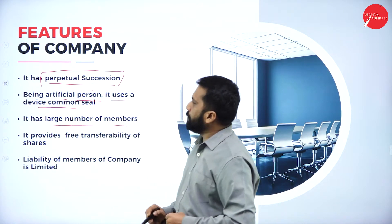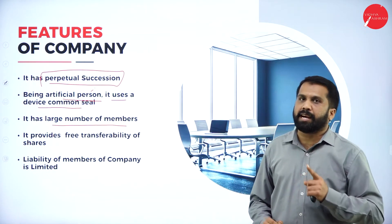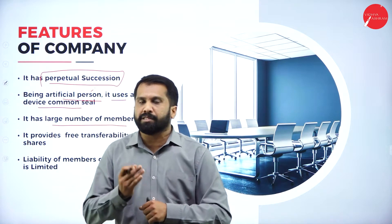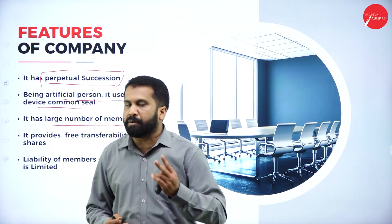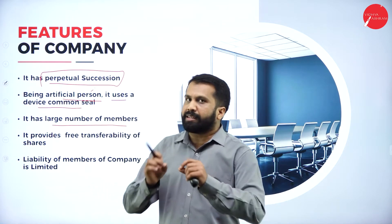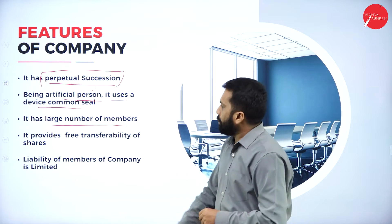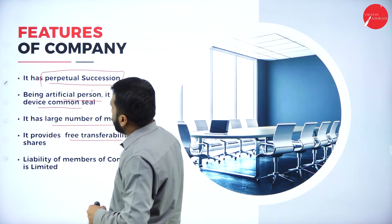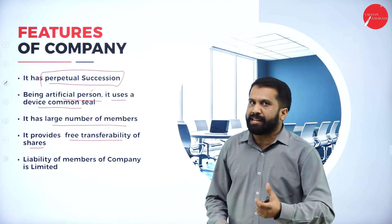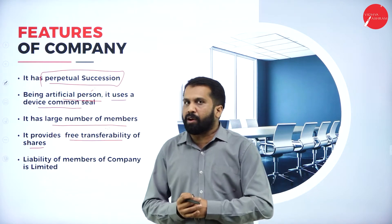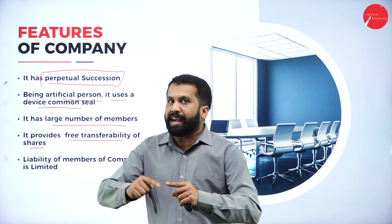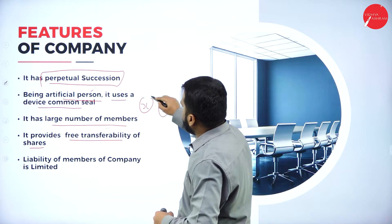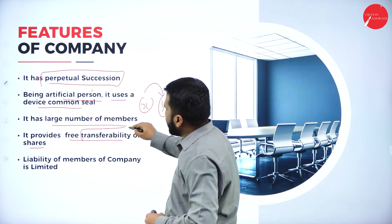It has a large number of members. One person cannot start a company. As you know, we need minimum seven members for a public company — minimum two members, minimum seven, maximum 200. These are the numbers you are supposed to remember. It also provides free transferability of shares. If you have purchased a share of XYZ company and you are not interested, you can transfer it to somebody else. X is having this share today; tomorrow Y may have the same share. This is called transferability.